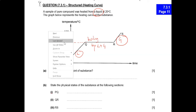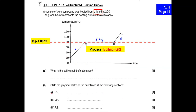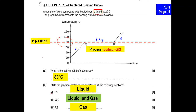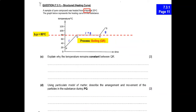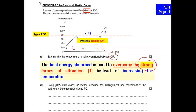The boiling point of this substance is 80 degrees Celsius, since we have identified 80 degrees as the boiling point. The physical states for P, Q, and R are: liquid, liquid and gas, and finally gas. Once you annotate your graph correctly and accurately, the questions are easy to answer. Why does the temperature remain constant? At Q to R, boiling happens from the liquid state to the gaseous state, so the energy is used to overcome the strong forces of attraction.